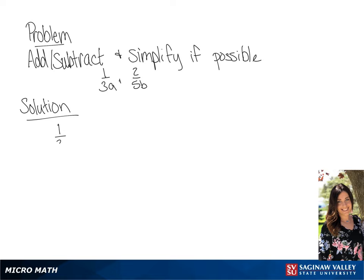We have 1 over 3a plus 2 over 5b. We need a common denominator, which in this case is going to be 15ab. So we're going to multiply the first fraction by 5b over 5b, and the second fraction by 3a over 3a.